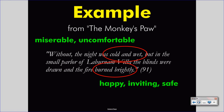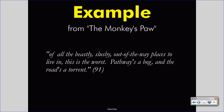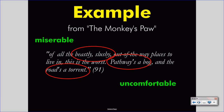Let's look at more examples from Jacobs's The Monkey's Paw. On page 91, Mr. White states: "Of all the beastly, slushy, out of the way places to live in, this is the worst. Pathway's a bog, and the road's a torrent." We can see a few pieces of imagery within Mr. White's statement. "Beastly" and "slushy" convey a sense of image and definitely feeling. "Pathway's a bog" and "the road's a torrent" keep that image going. We know the setting is miserable and uncomfortable — the environment outside the villa is definitely not a place that you want to be.